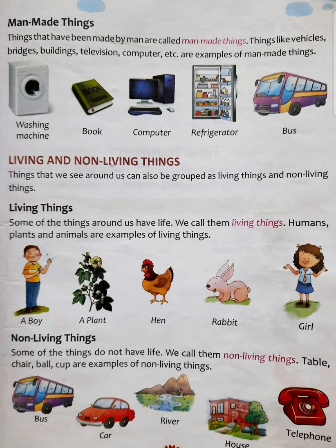Ab aap yeh pata kaise lagaoge ki yeh jo thing hai, yeh living thing hai ya non-living thing hai, kaise find out karoge ki kisme life hai aur kisme life nahi hai. Yeh hum bahut easily find out kar sakte hain. Jo living things hoti hain unki apni kuch characteristics hoti hain, unki apni kuch pehchaan hoti hai, aur non-living things jo hain woh unse bilkul different hoti hain.